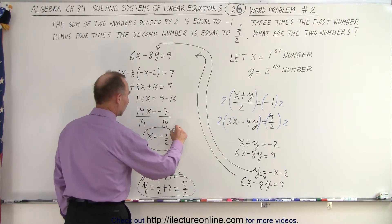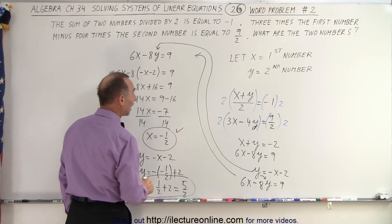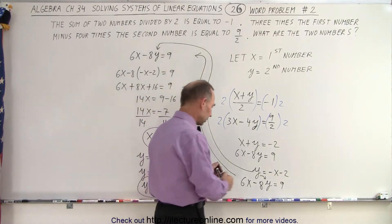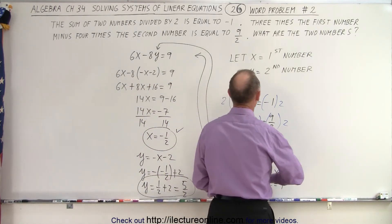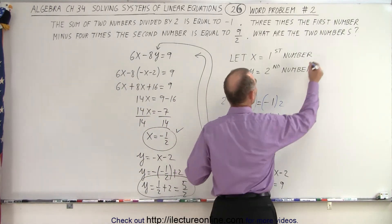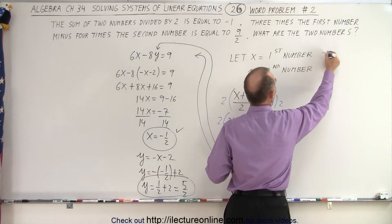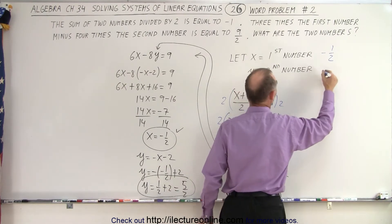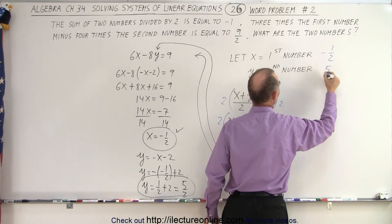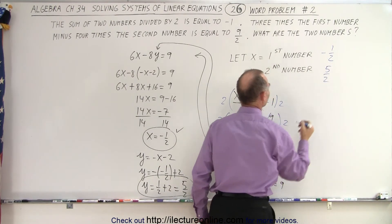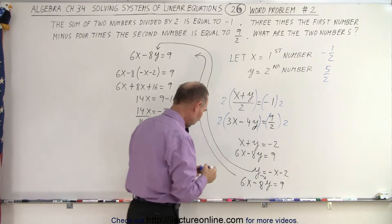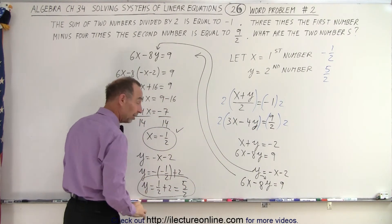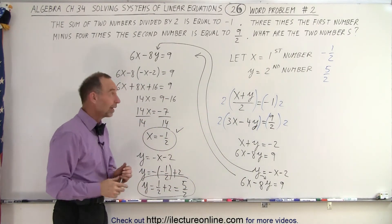So x equals negative one half — that's the first number — and the second number equals positive 5 over 2. Let's do a quick check to make sure we did this correctly.